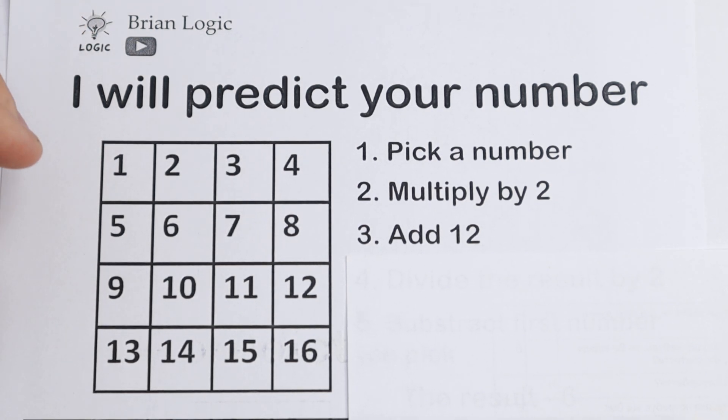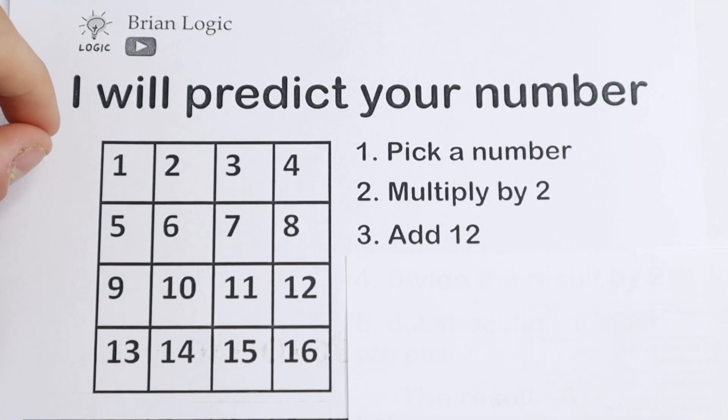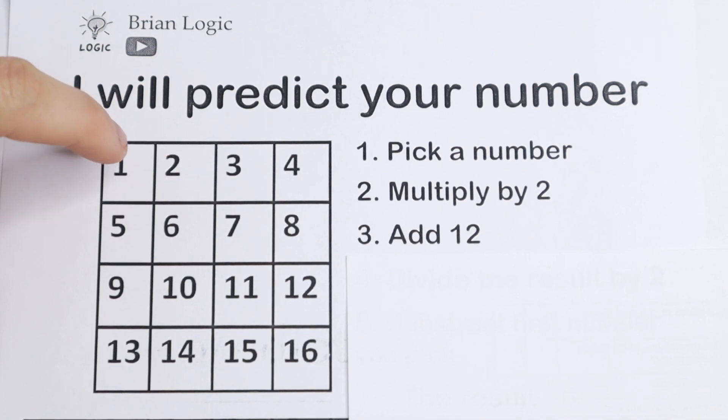You need to add, for example 12, doesn't matter, but I suggest add to this result. After this second step you need to add 12. For example pick 2, multiplying by 2, 4 and add 12, we'll have 16. So do the thing with your number.